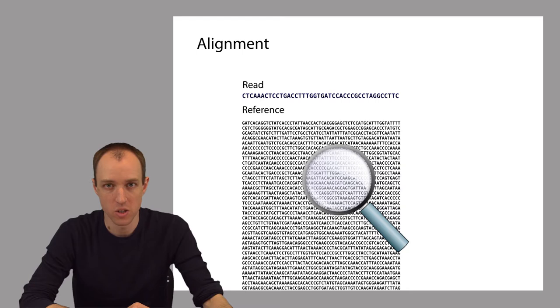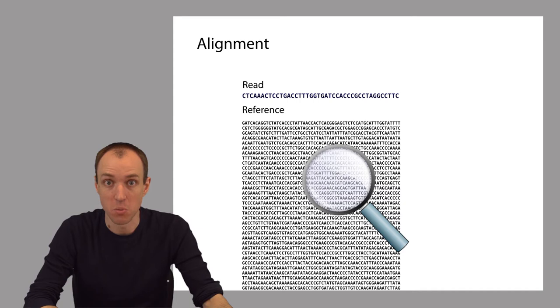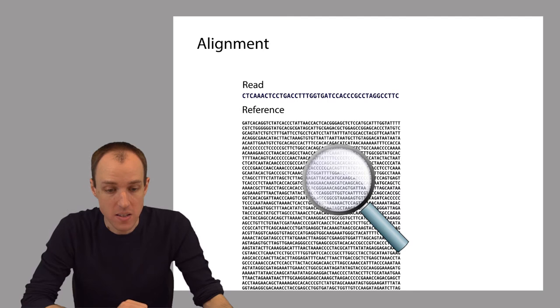What we're really doing here is repeatedly going through a process where we have a sequencing read, shown here at the top, and we have a reference genome, which might be the entire human reference genome. We're looking for the place in the reference genome where the read sequence matches most closely. We're doing this repeatedly, once for every single read in our data set.